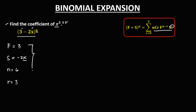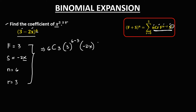Then to solve for the coefficient of x to the power 3, from this formula we have n choose r — so 6 choose 3 — times the first term to the power n minus r, which is 6 minus 3, times the second term negative 2x to the power r, which is 3.